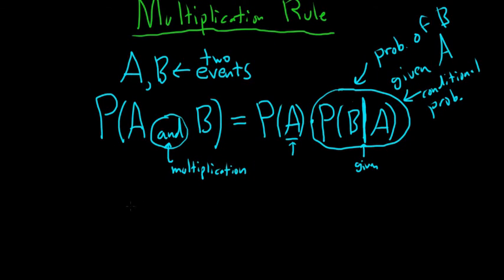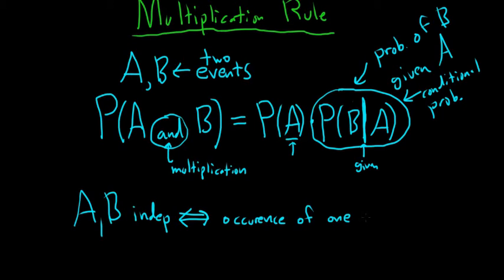Sometimes events are unrelated, so the occurrence of one event will not affect the other. Those types of events are called independent events. So we say two events A and B are independent - this is a biconditional arrow - as saying that the occurrence of one does not affect the other.